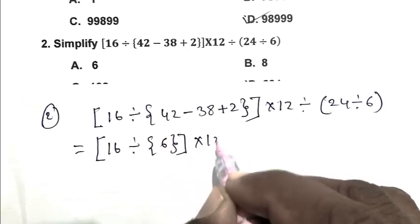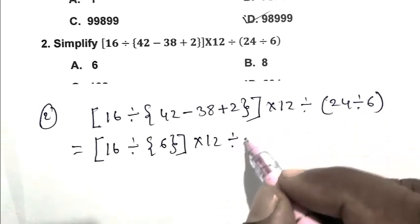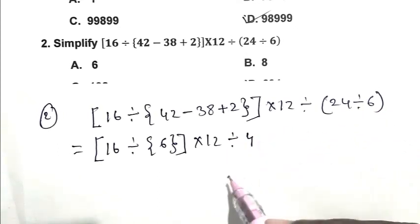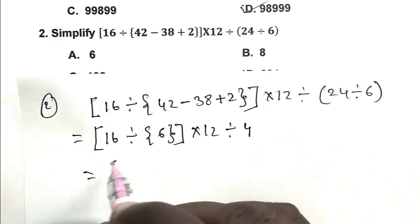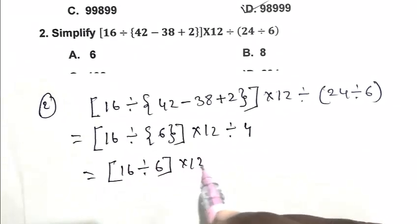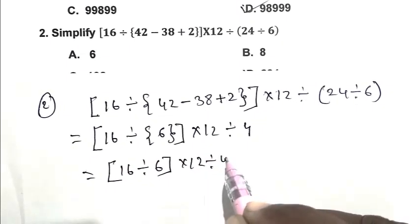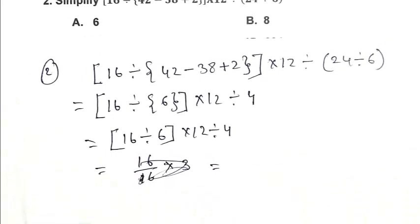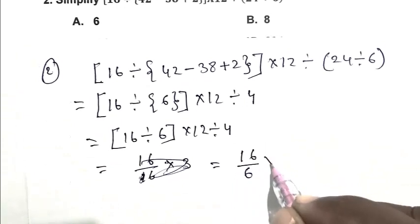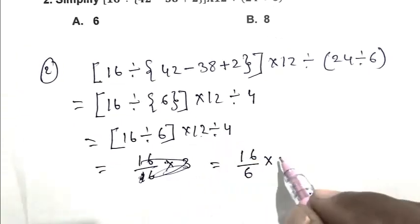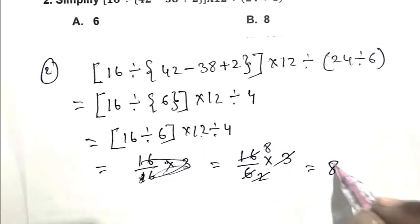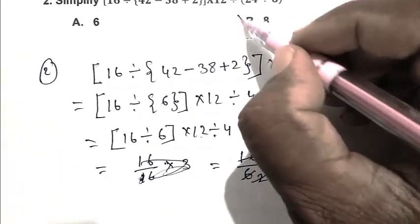Then 12 divided by 4. So [16 ÷ 6] × [12 ÷ 4]. So friend, 16 divided by 6 is 8 divided by 3, multiplied by 3, equals 8. So B is the right answer.